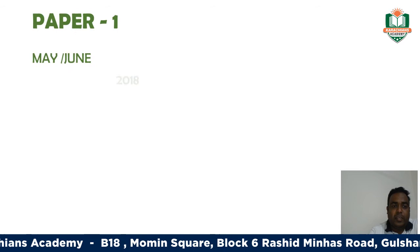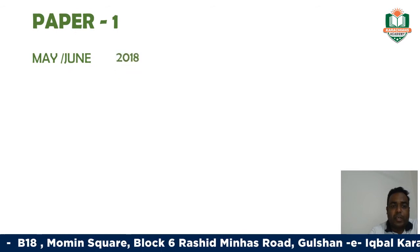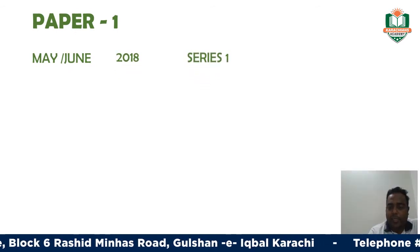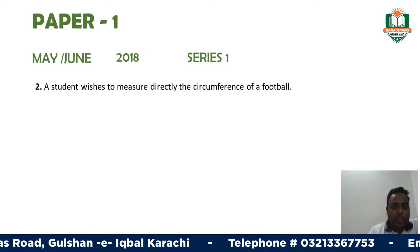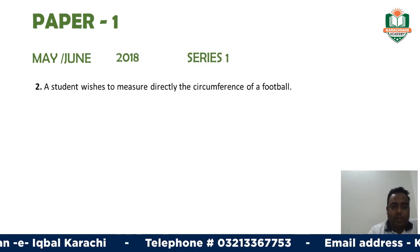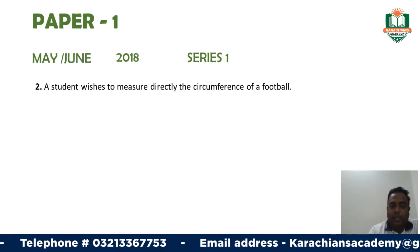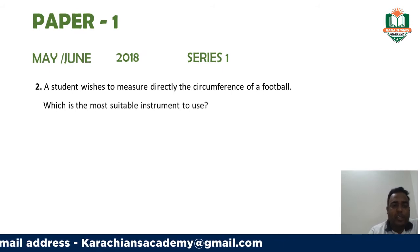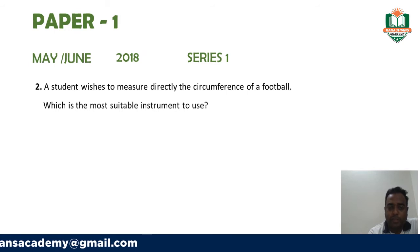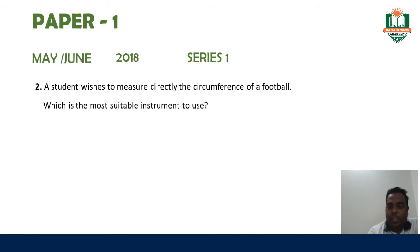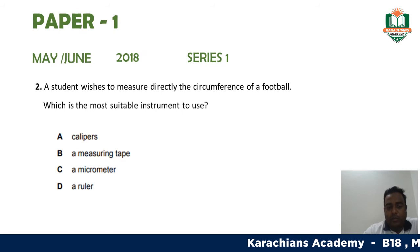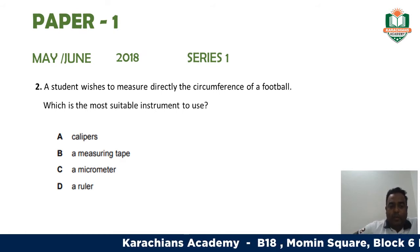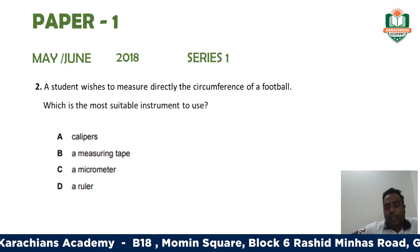The next question has been taken from the May/June exam of 2018, Series 1. The question is: a student wishes to measure directly the circumference of a ball. Which is the most suitable instrument to use? The student wishes to measure the circumference of a football using a certain measuring instrument.